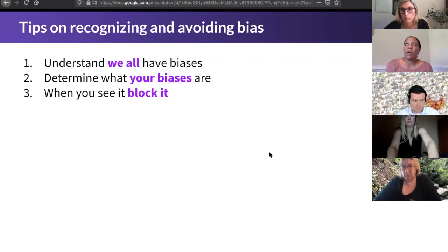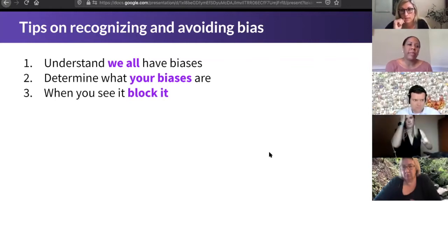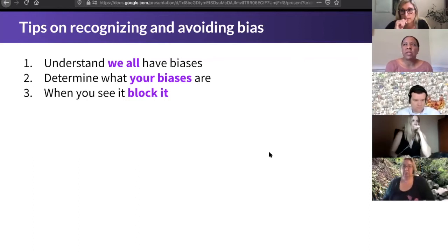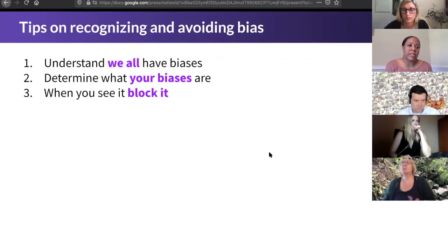This is the part where we have in our handbook — feel empowered to speak up. Feel empowered to speak up when you're noticing bias in a team environment or in a one-on-one conversation. When you notice these things, have a conversation with your team member. When you recognize it and you see it, block it.